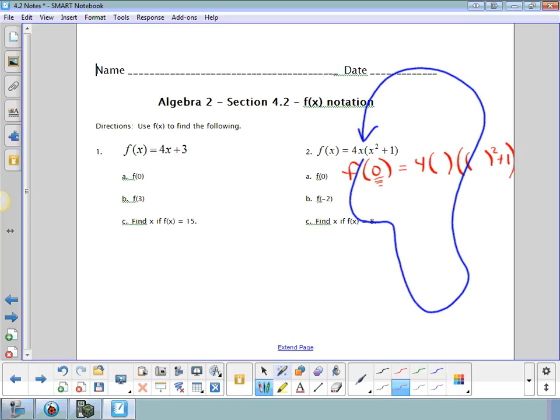Wherever you see an x, put a 0. So we need to do 4 times 0 times 0 squared plus 1. Well, what's 4 times 0? 0. What's 0 squared? 0. 0 squared is 0. Plus 1 is 1. So what's 4 times 0 times 1? 0. So the answer here is 0.